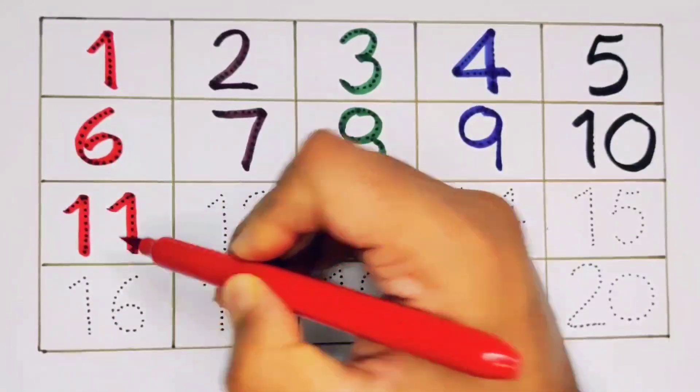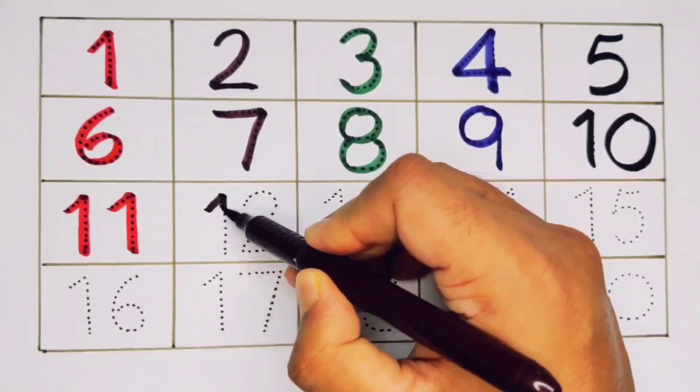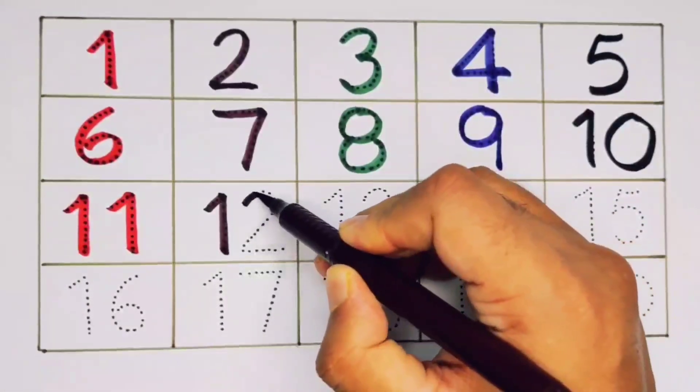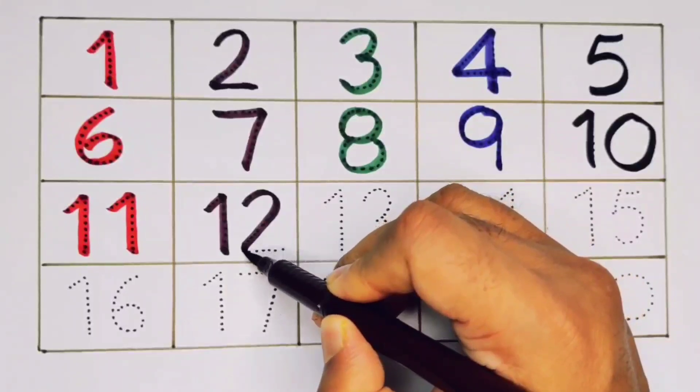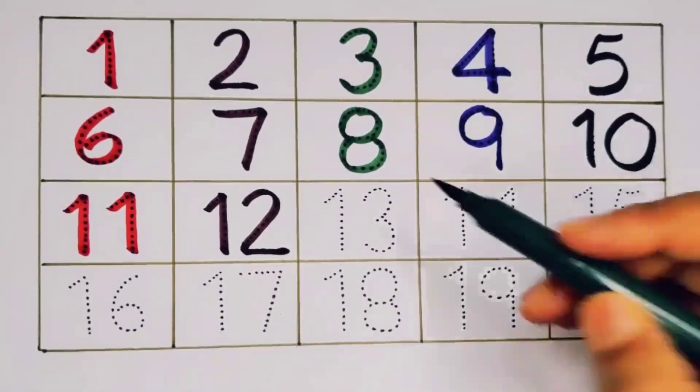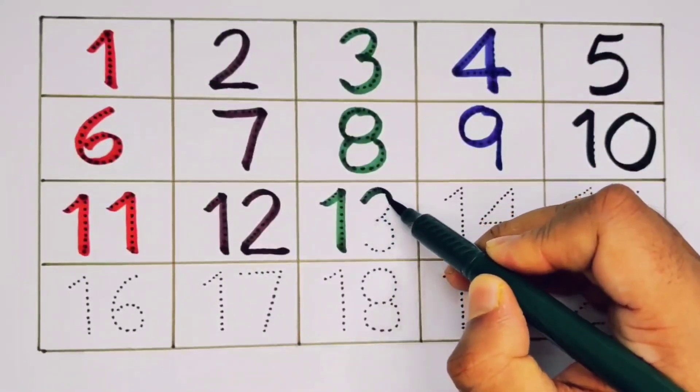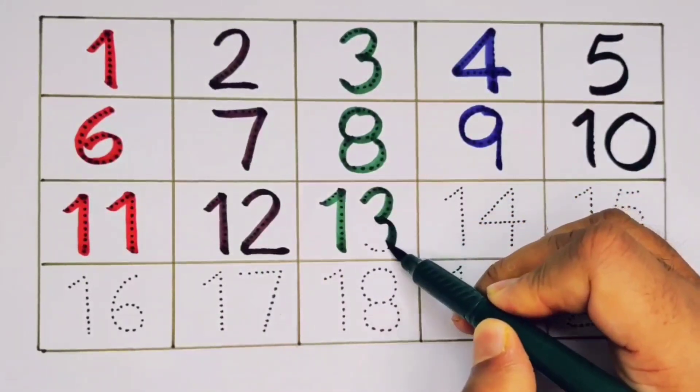One, one, eleven. One, two, twelve. One, three, thirteen.